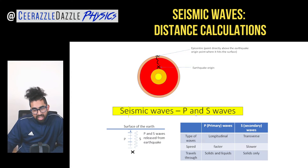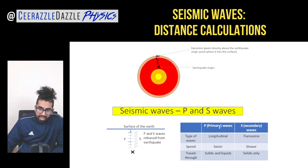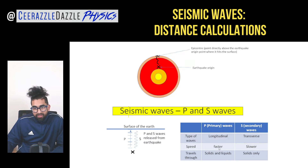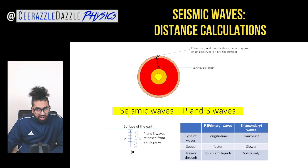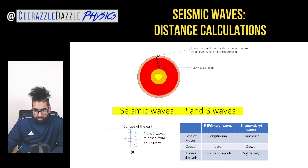There are two types of seismic waves: P waves and S waves. P waves are called primary waves — they're longitudinal, they're faster, and they can travel through solids and liquids. S waves are transverse, they're slower, and can only travel through solids.